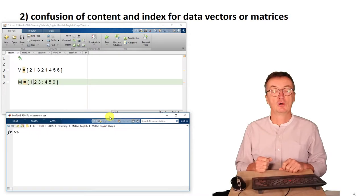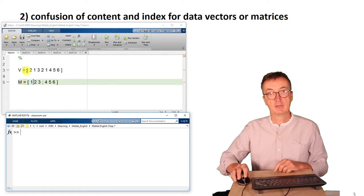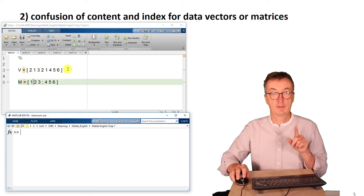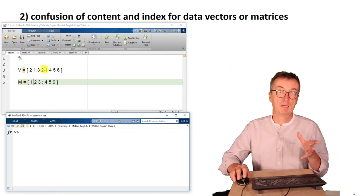Second problem, confusion of content and index of a vector or a matrix. For instance, here the vector has got these numbers, that's the content and the index is 1, 2, 3, 4 and so on. So it's quite easy to mix that.